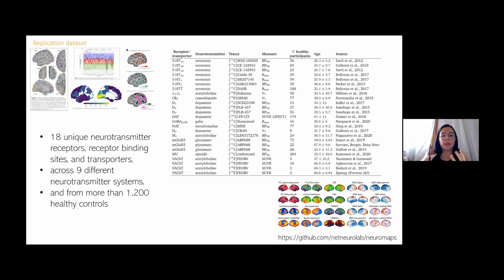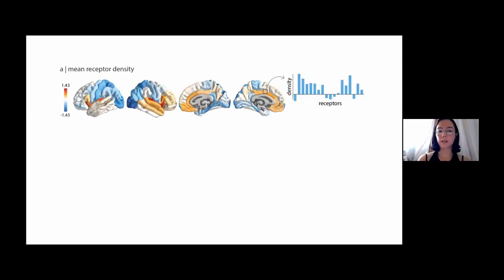To give you an idea of what this dataset looks like, we take all these PET tracers, parcellate them into a certain parcellation, and then collate them as brain regions by receptors. This is the mean receptor density across brain regions. It is heterogeneous and is enriched in certain brain regions where every brain region is represented. This would be the average across these densities of all 18 receptors.